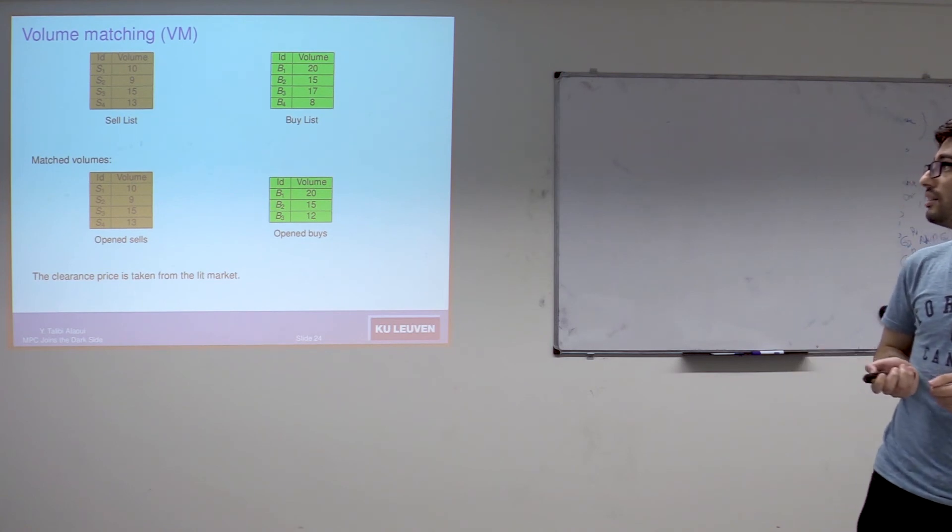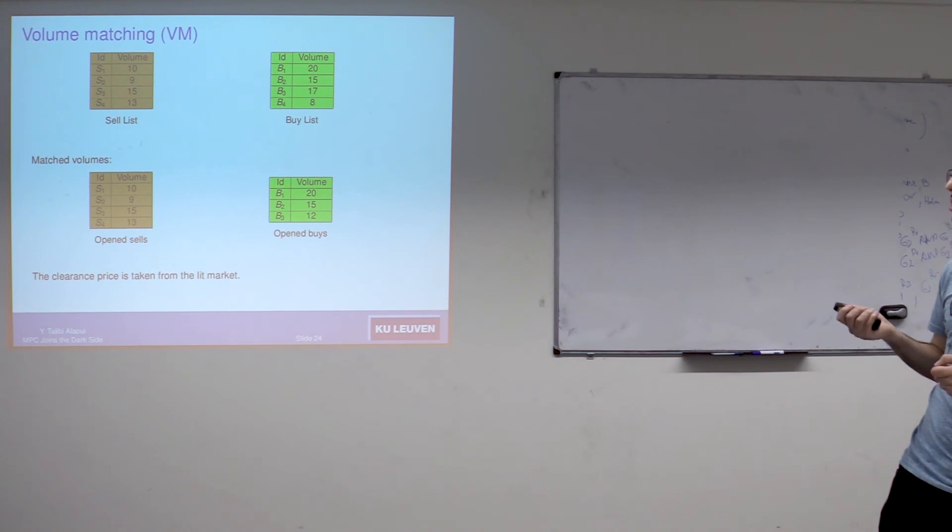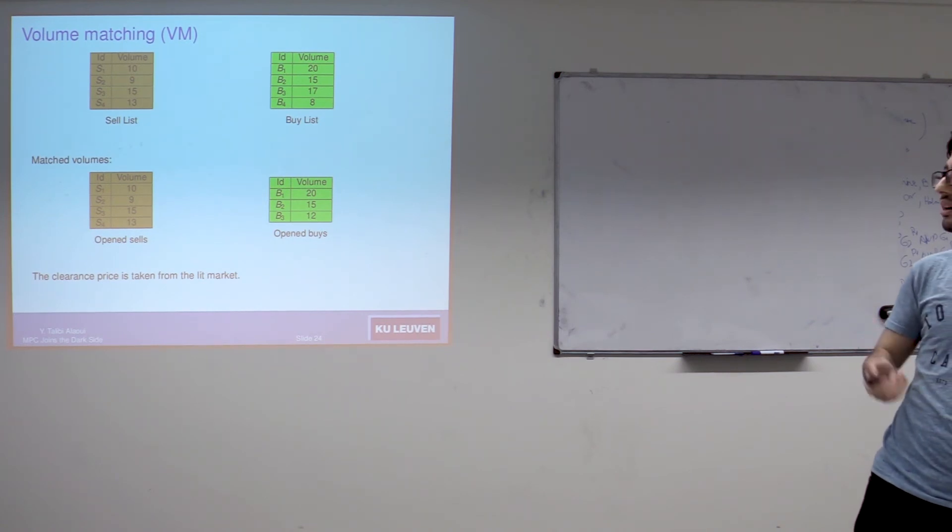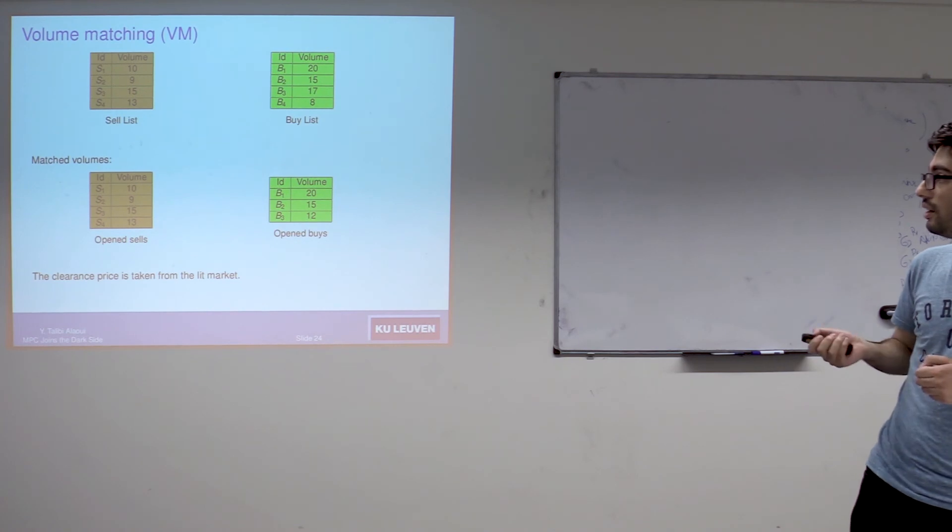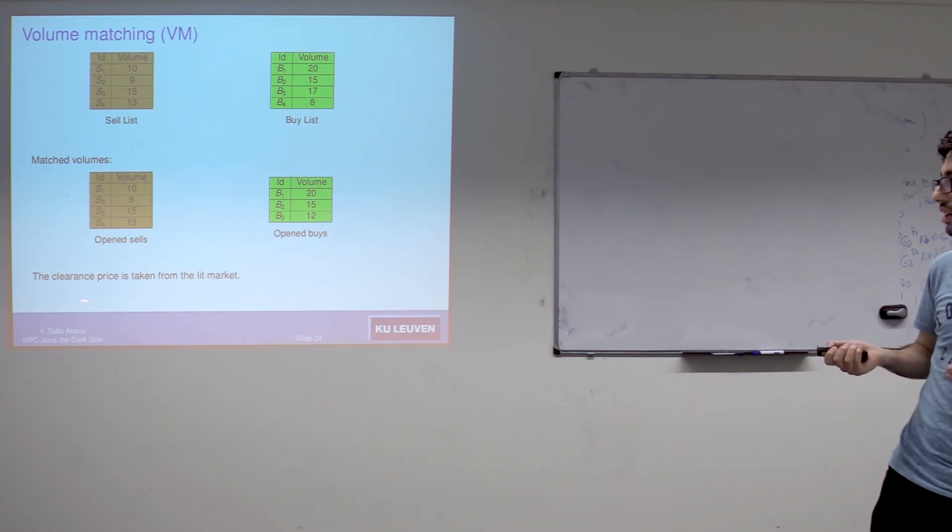The third algorithm is much simpler than the two first ones, which is the volume matching. In this one, sellers and buyers don't include the price they are wishing to trade with. Here basically we just need to match volumes. Orders here are ordered with respect to which one came first. The clearance price is taken from the lit market.